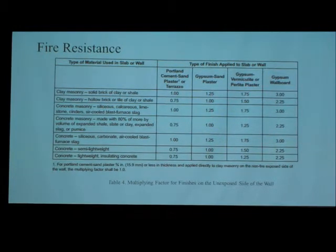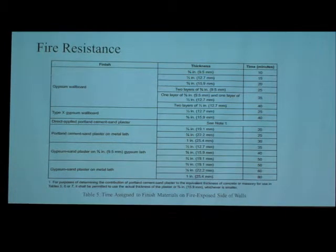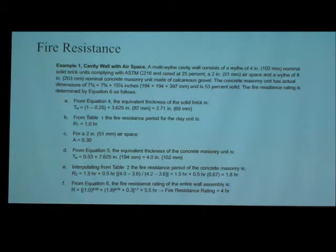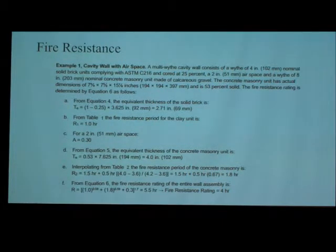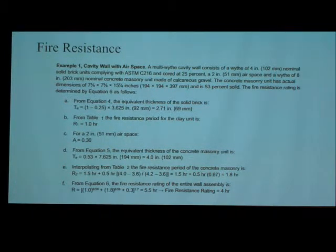This table shows modifying factors for finishes on the unexposed side of the wall, and this table is for finish materials on the fire-exposed side of walls. The example: a multi-wythe wall consists of a wythe of 4-inch nominal solid brick units combined with SGMC to 16 and 25 percent — more 2 inches in space — and a wythe of 8-inch nominal concrete masonry made of gravel aggregate. The concrete masonry unit has actual dimensions of 7.625 by 7.625 by 15.625 inches, and the void percentage is 53 percent.